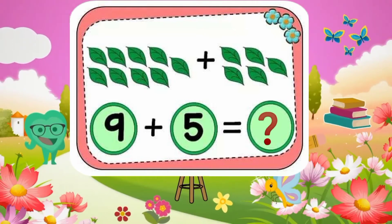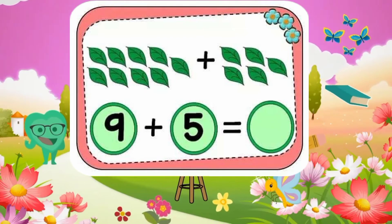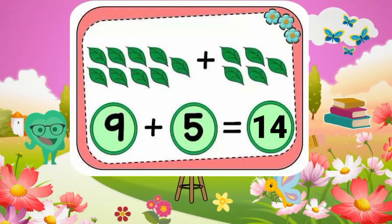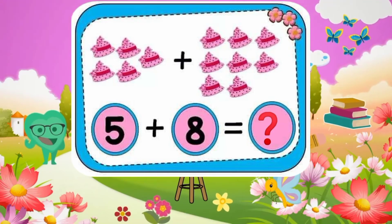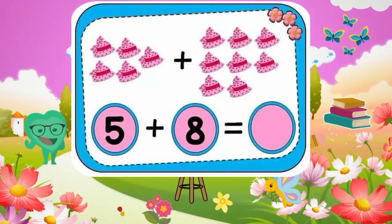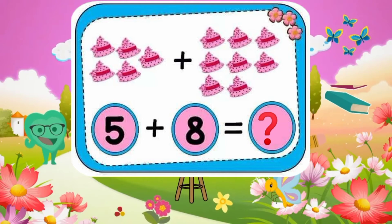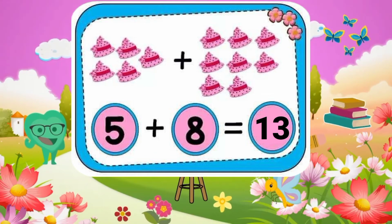9 plus 5 equals what? 9 plus 5 equals 14. Superb.